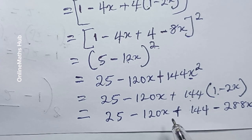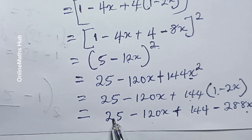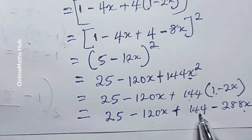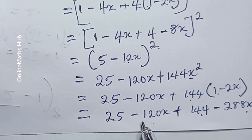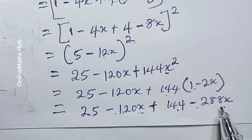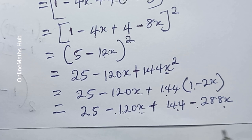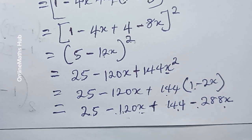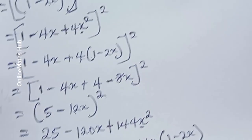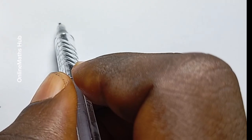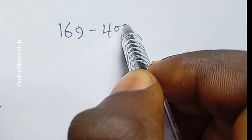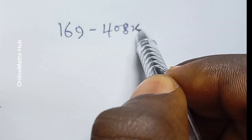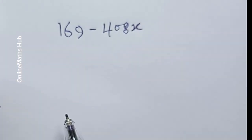Opening that bracket gives 144 and then minus 288x. So summing the constant terms: 25 plus 144 gives 169, and summing the x terms: minus 120x minus 288x gives minus 408x. So what I'm having at this point is 169 minus 408x.